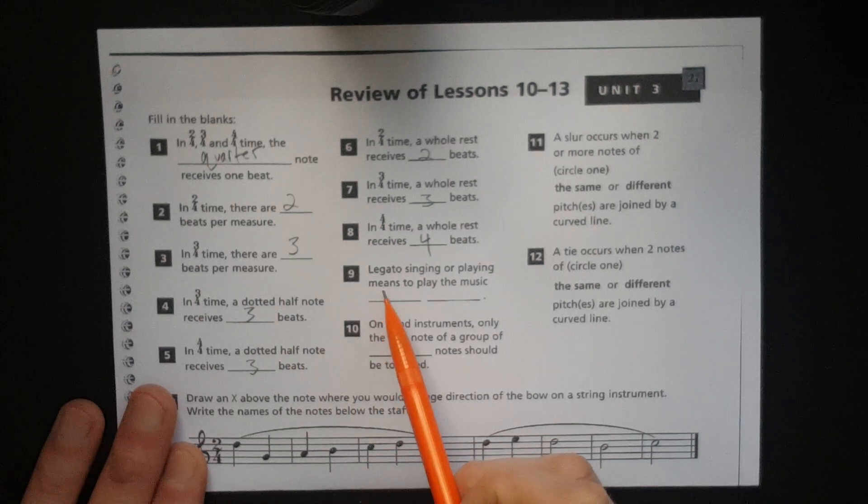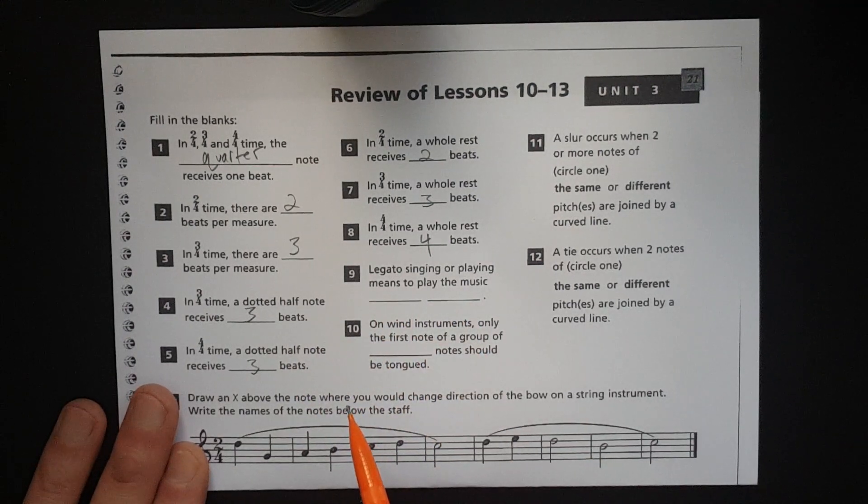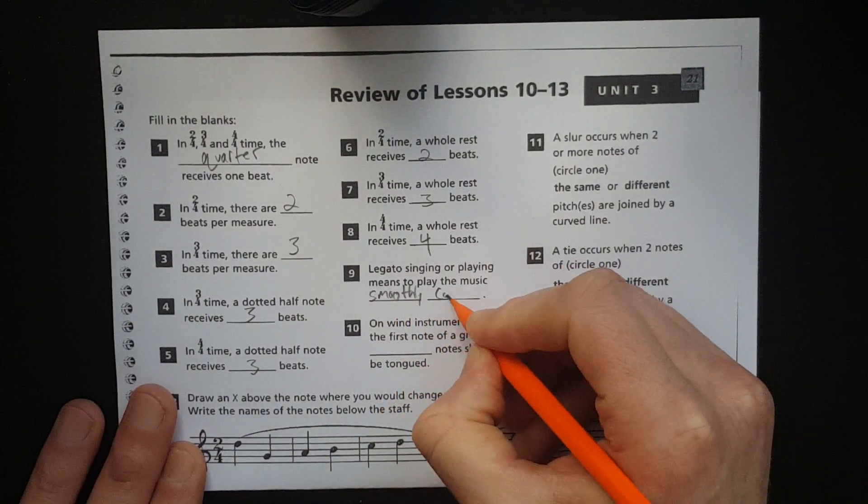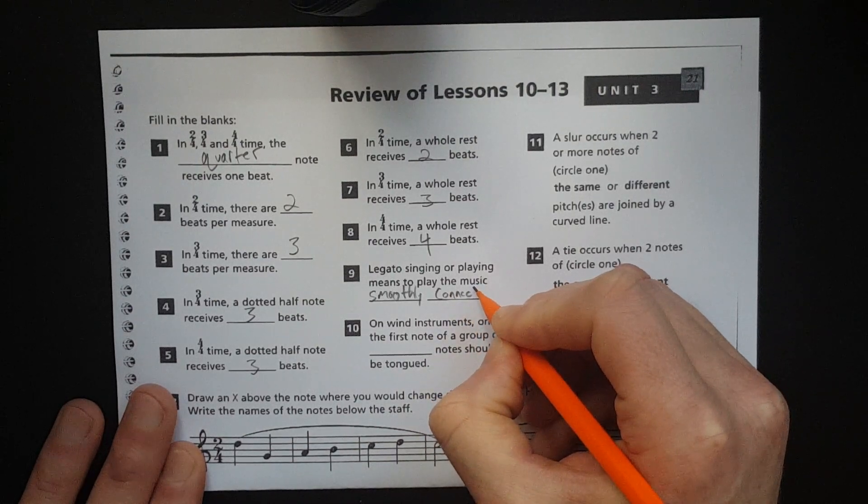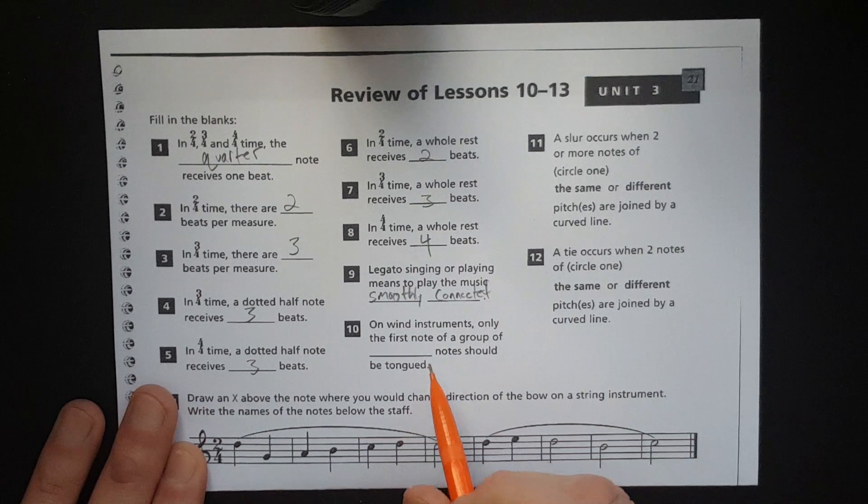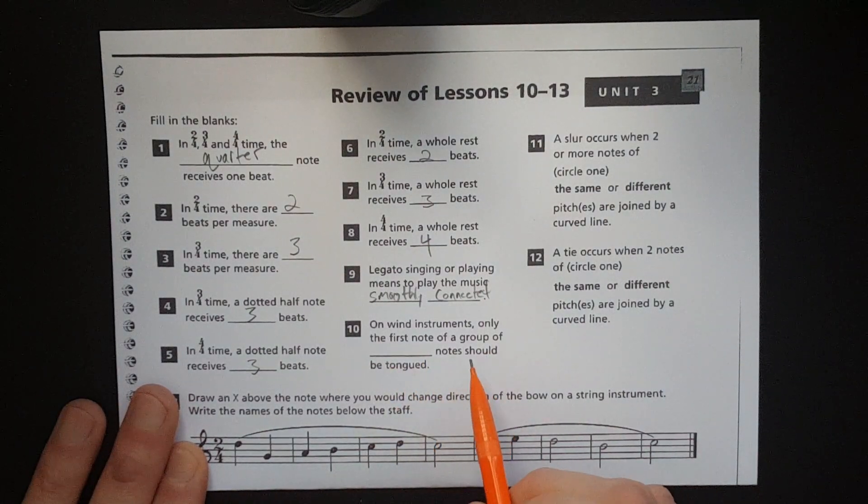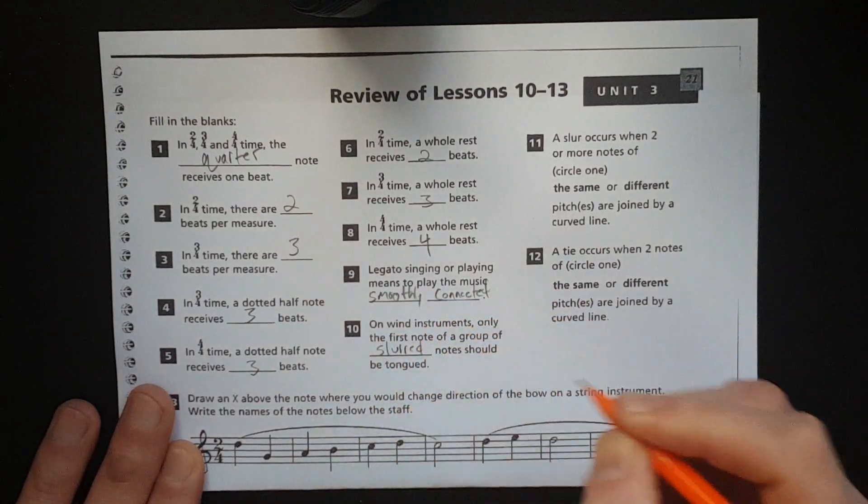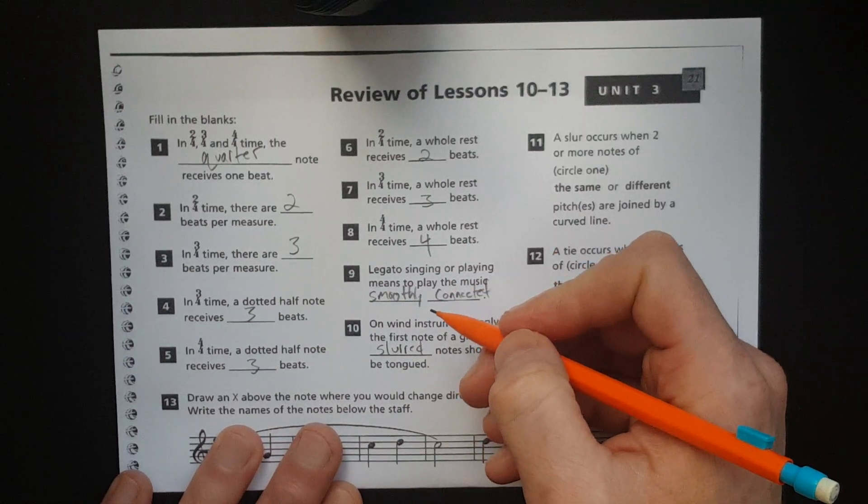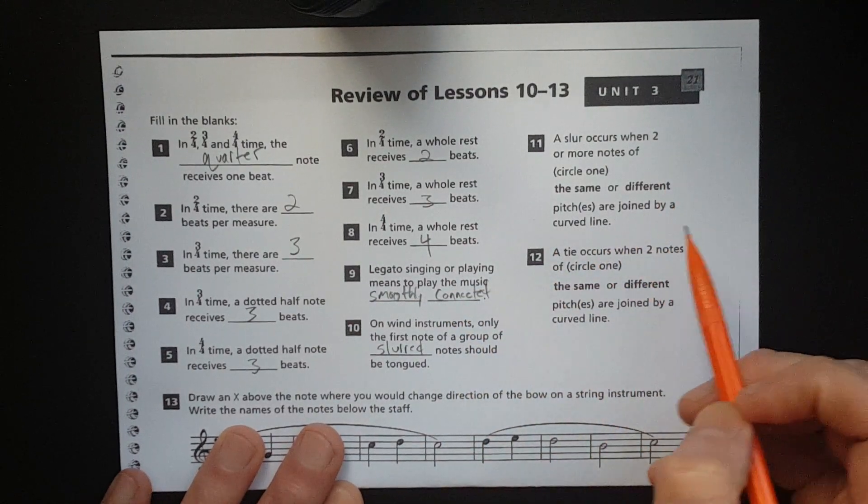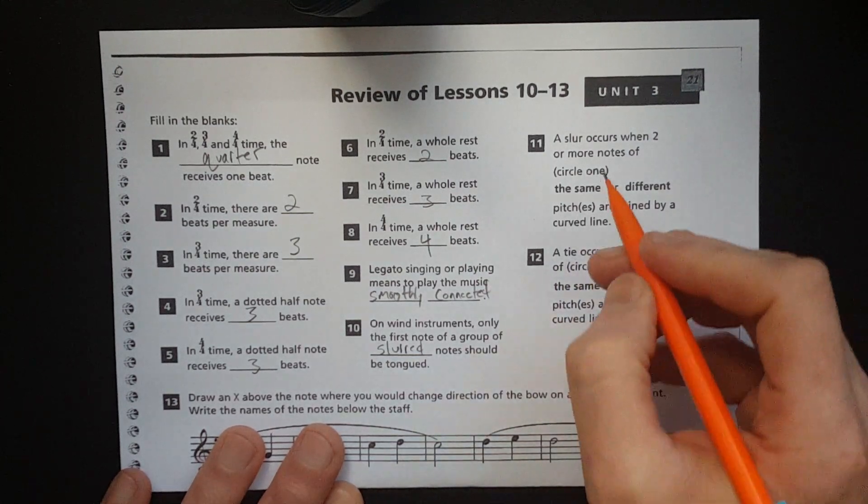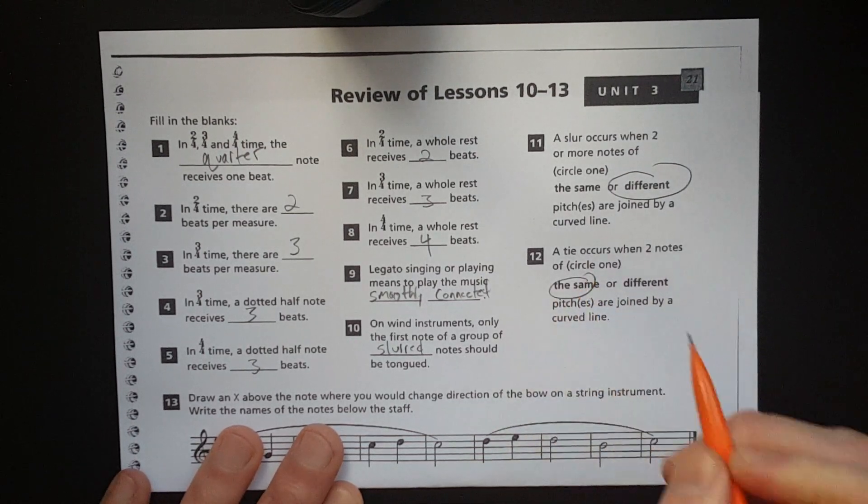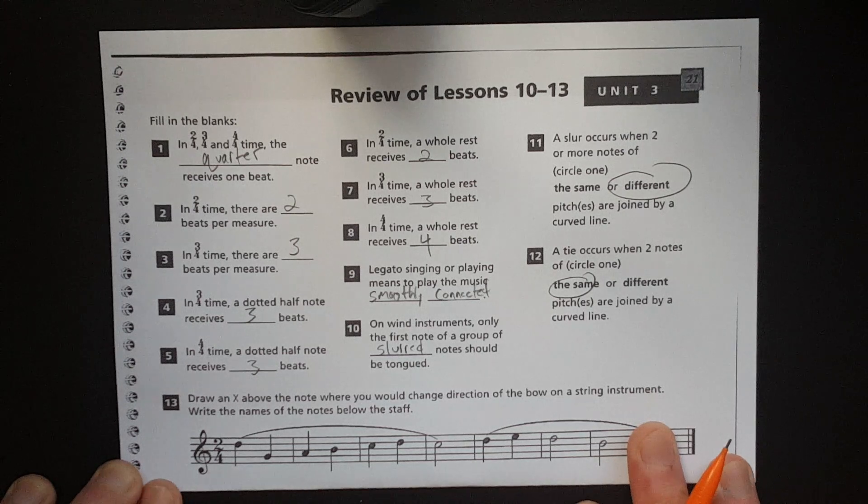Okay, number nine. Legato singing or playing means to play the music smoothly connected, is what they're looking for there. Number 10. On wind instruments, only the first note of a group of slurred notes should be tongued. Number 11. A slur occurs when two or more notes of the same or different pitches are joined by a curved line. That's going to be different pitches. Remember, the tie occurs when two notes of the same pitch are joined by a curved line.